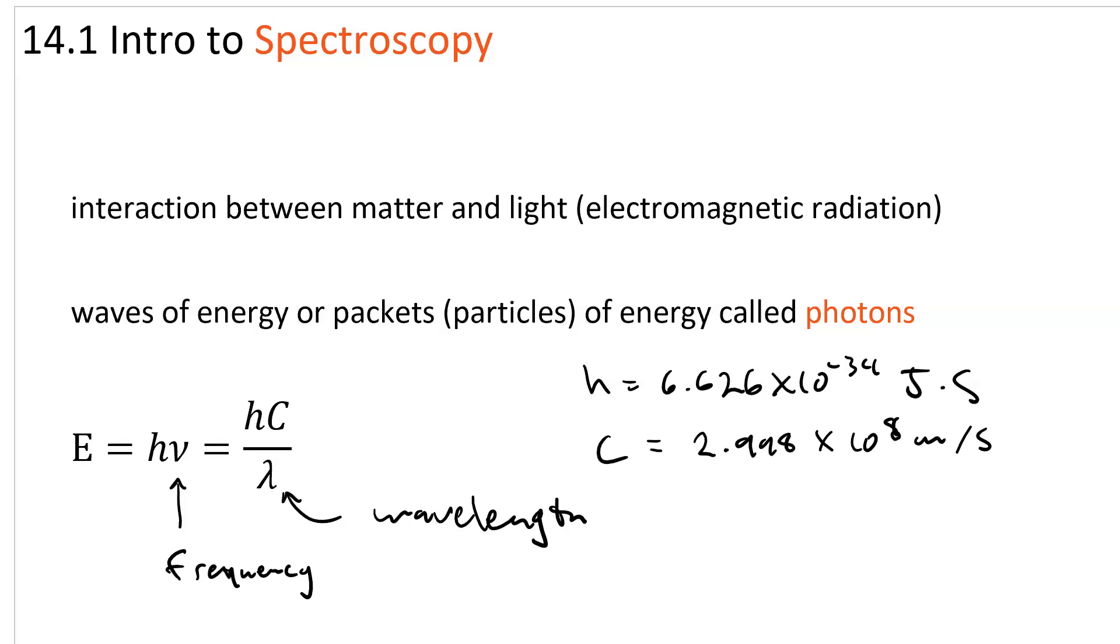You can see that frequency and wavelength are inversely proportional to each other, and energy and frequency are directly proportional to each other. So from this equation we can say higher energy means a higher frequency which means a shorter wavelength.